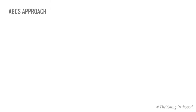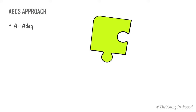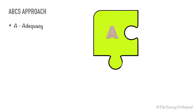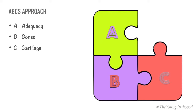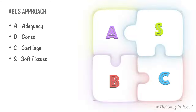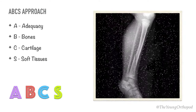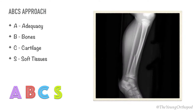To every trauma radiograph that you see, you must always apply the ABCS approach. Here A stands for adequacy, B for bones, C stands for cartilage, and S is for soft tissues. Let's see each of these one by one.